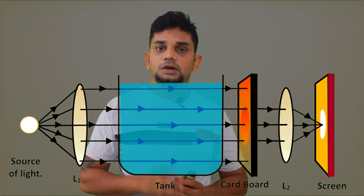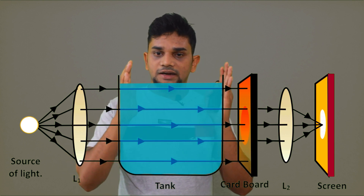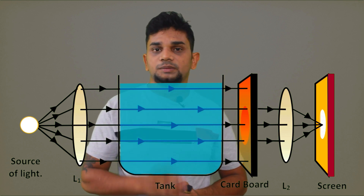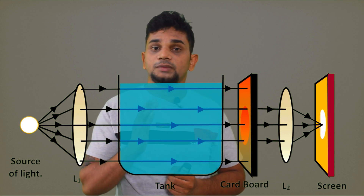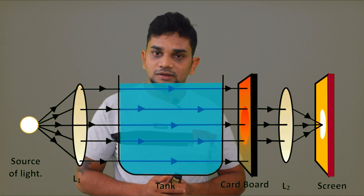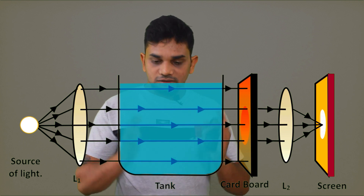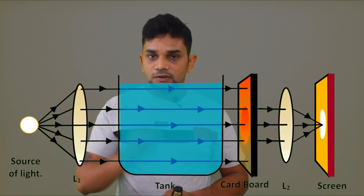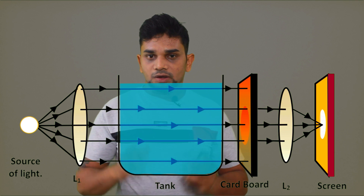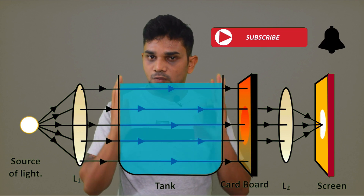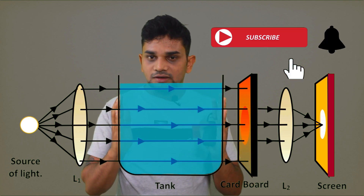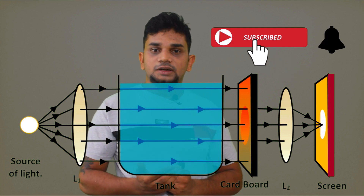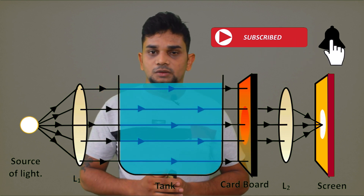Now we are going to add sodium thiosulfate into the water. After some time we have a solution of sodium thiosulfate. Then we add concentrated sulfuric acid into the solution.